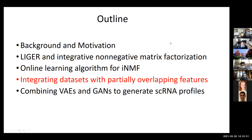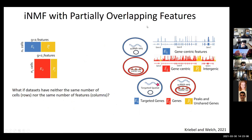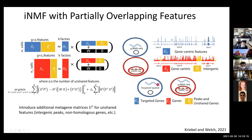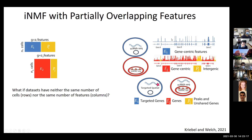Now I'll change gears and talk about how to extend the iNMF algorithm for the case where features partially overlap. This is an unusual case in data integration, but it makes for an interesting computational problem. For many cases where we want to integrate single cell datasets, the features don't fully overlap.